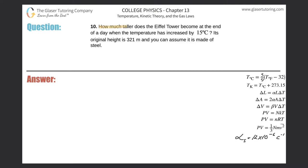Number 10: How much taller does the Eiffel Tower become at the end of a day when the temperature has increased by 15 degrees Celsius? Its original height is 321 meters and you can assume it is made of steel.